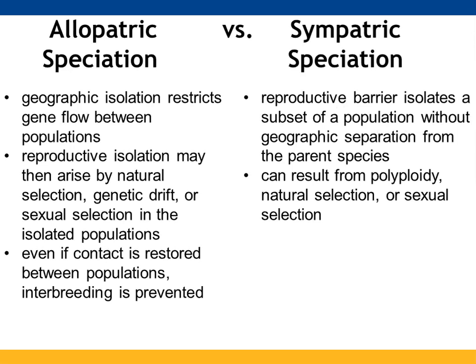Overall, allopatric speciation involves geographic isolation over time that prevents gene flow between populations. Reproductive isolation can then occur as a result of natural selection, genetic drift, or sexual selection in those isolated populations. If the populations come back together, interbreeding is not successful. With sympatric speciation, there is some sort of reproductive barrier within a subset of the population without physical separation. Polyploidy and natural selection or sexual selection can lead to sympatric speciation.